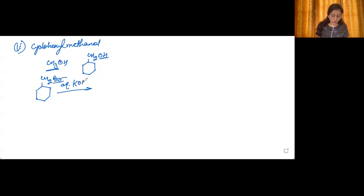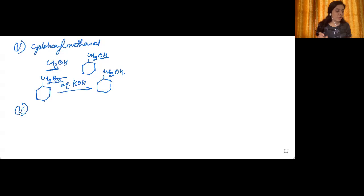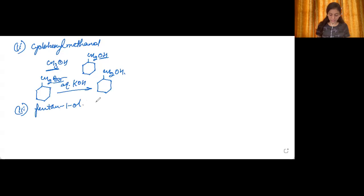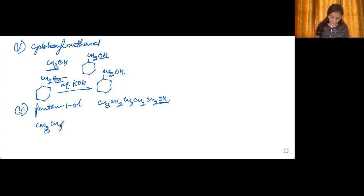The third part: prepare pentane-1-ol using a suitable alkyl halide. Pentane-1-ol is CH₃CH₂CH₂CH₂CH₂OH. You can replace the OH with chlorine or bromine to get the corresponding primary alkyl halide, then treat it with aqueous NaOH or aqueous KOH — just like the equation above — and you will get the product.